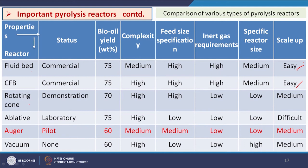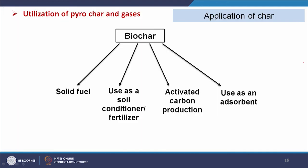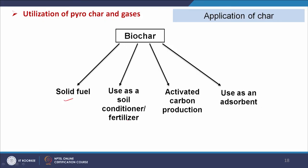Biochar produced through pyrolysis can be used for multiple applications: as a solid fuel, as a soil conditioner and fertilizer — its porous structure helps oxygen diffusion in soil and supports plant growth — for activated carbon production for adsorption, and directly as an adsorbent.